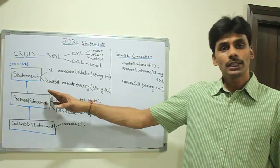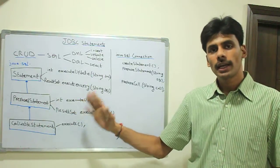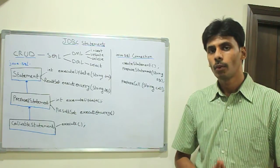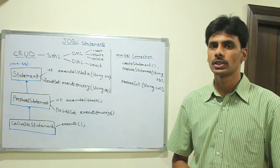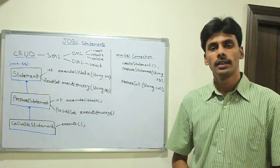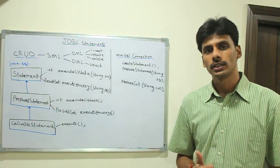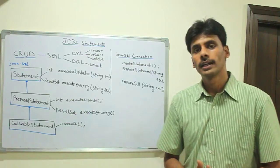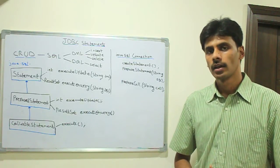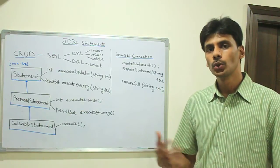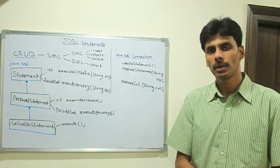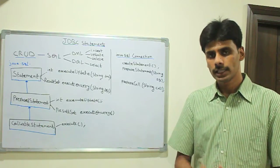That's about the Statement object — any basic SQL can be executed using the Statement object's methods. One limitation of the Statement object is that every time a SQL statement is sent to the database, the database does two things: compilation of the statement and preparation of the execution plan for that query. So it's a performance hit to do the compilation every time if we are executing the same SQL statement with different parameters.